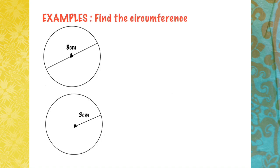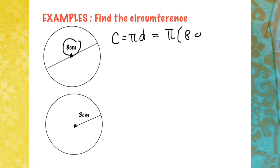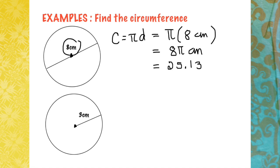Now let's take some examples. Find the circumference of the following circles. In the first example, you are given the diameter which is 8 cm. Using the formula C = πd, substituting 8 cm, the exact value for this circle's circumference will be 8π cm, or the estimated value, which is approximately 25.13 cm.